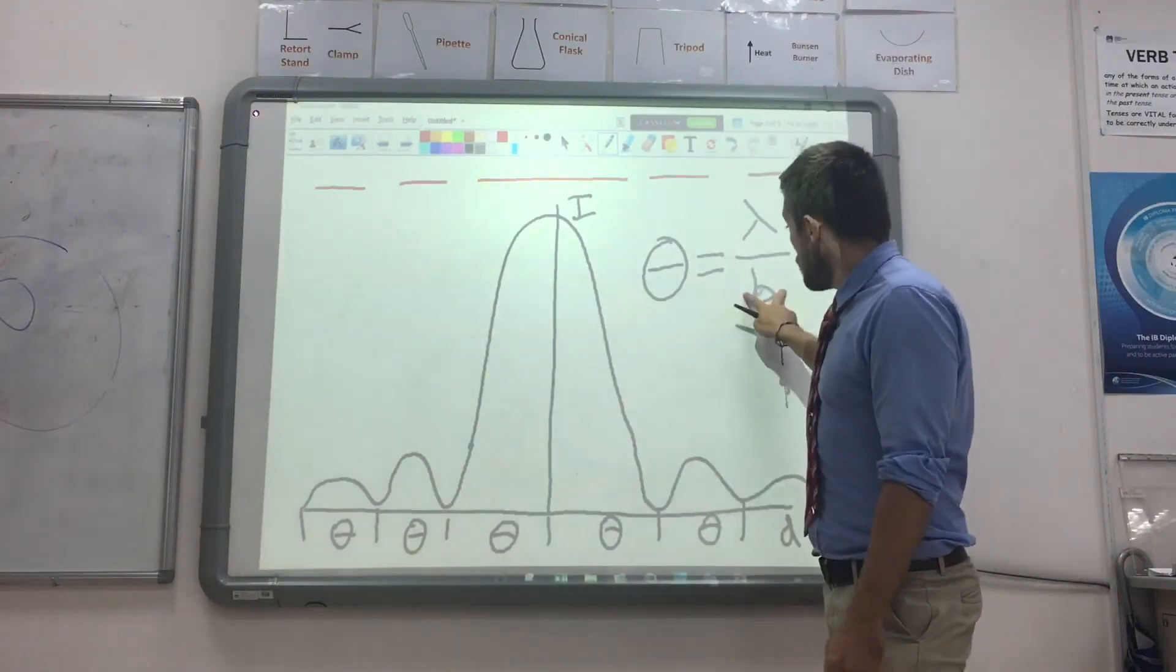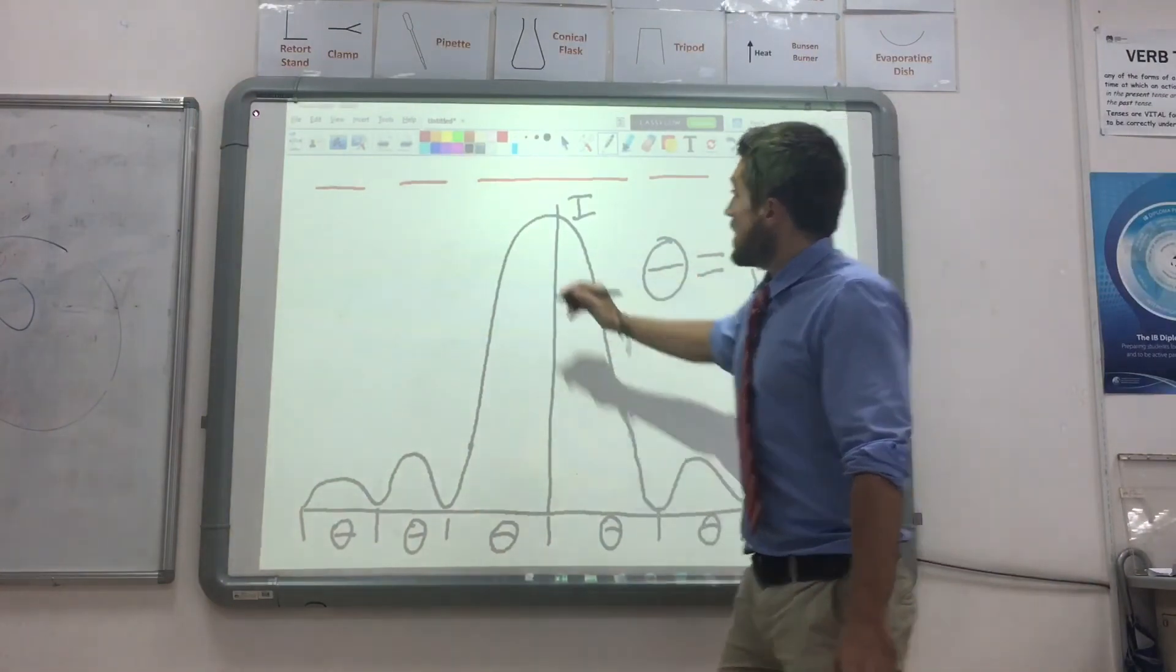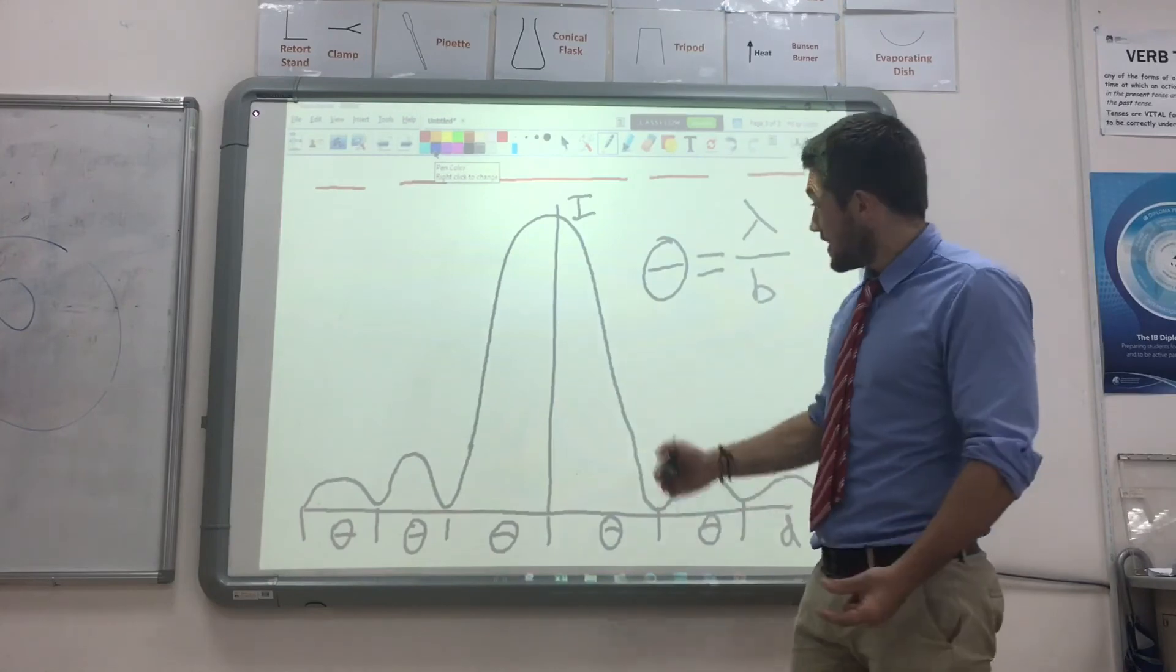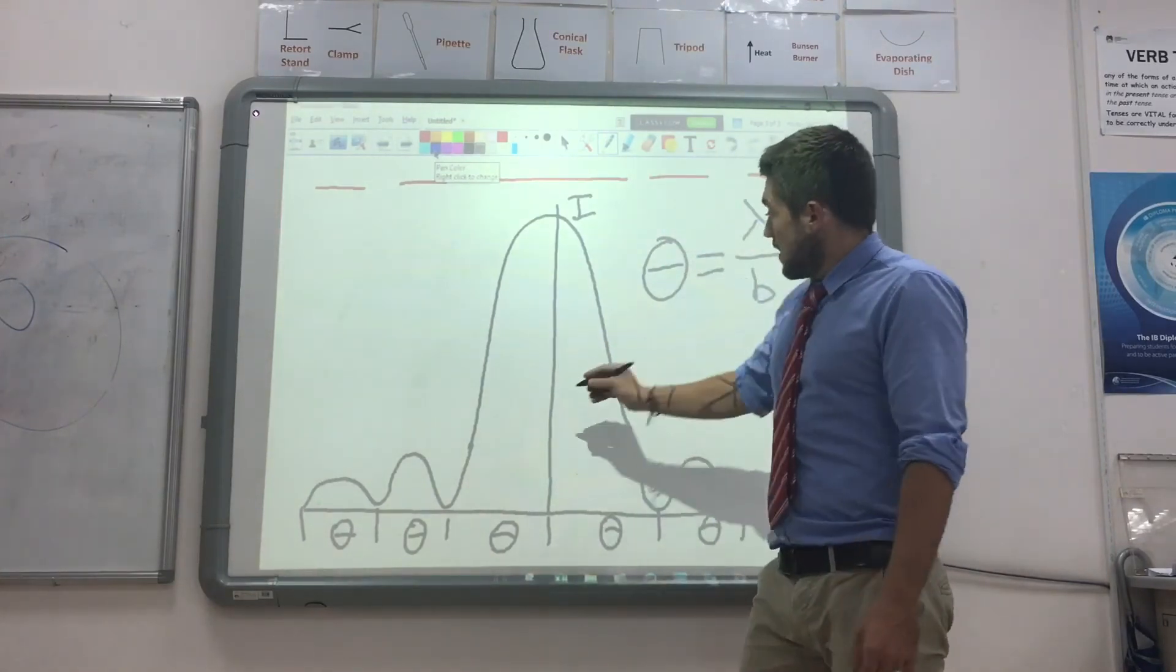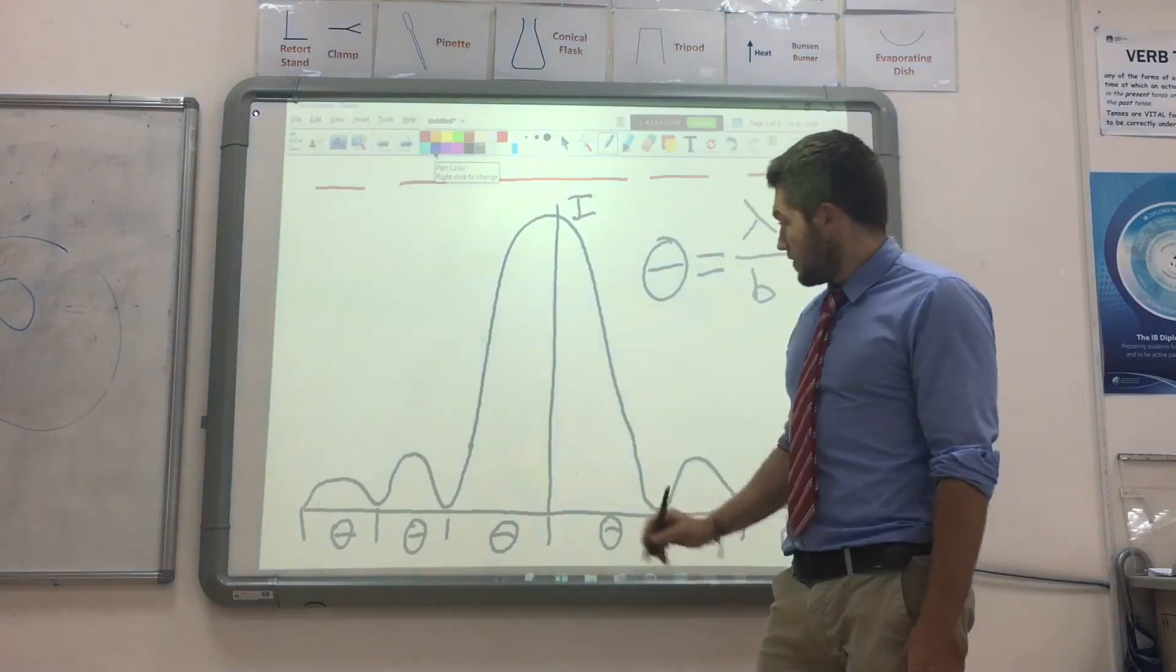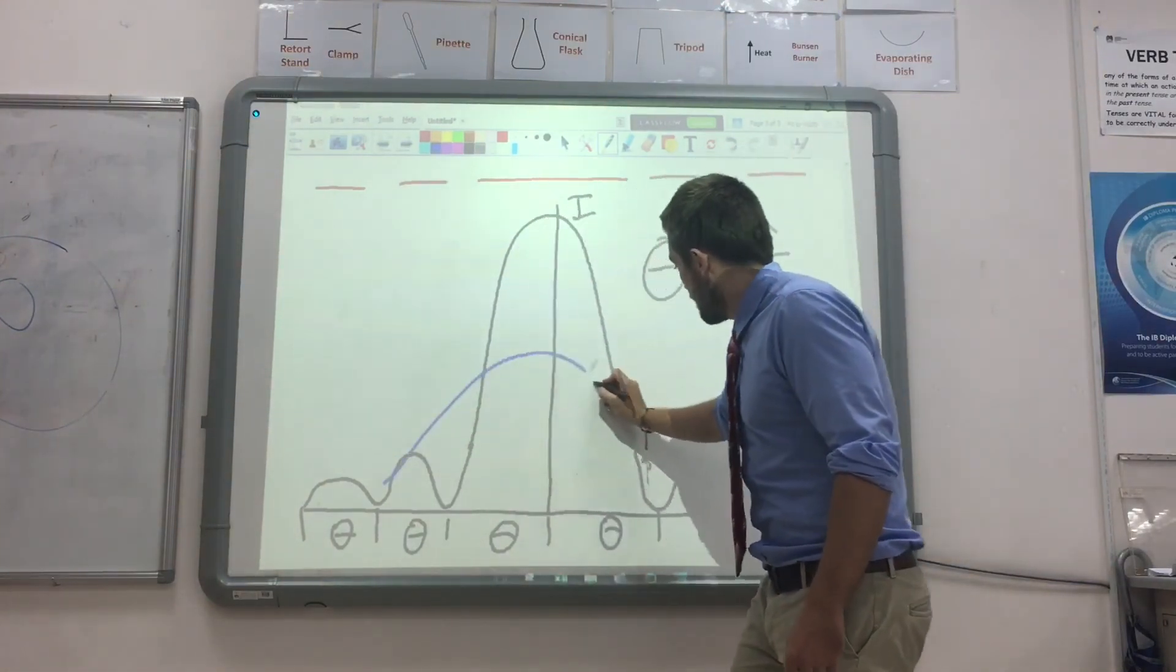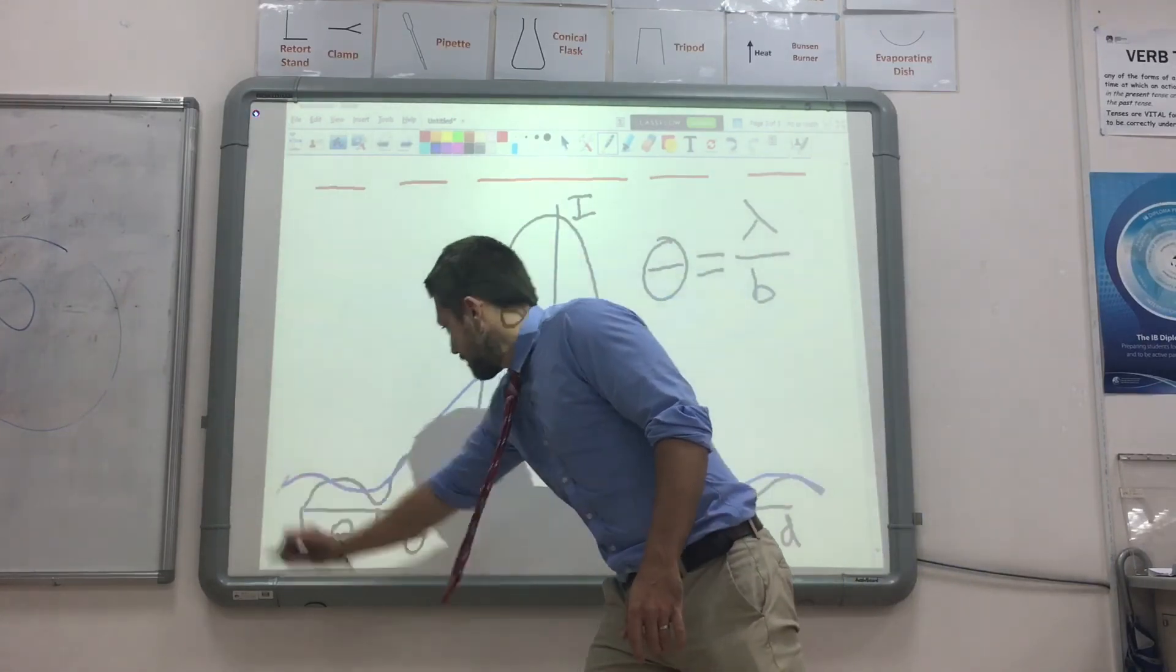So the smaller the slit, the bigger the angle. If we use a smaller slit, first of all less energy is going to get through so the peak intensity is going to be lower. But also it's going to be wider - theta is going to be bigger. So for a smaller slit, the graph would look something more like that.